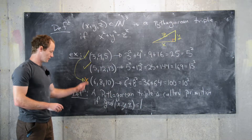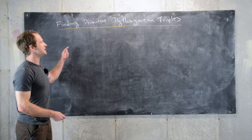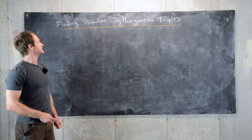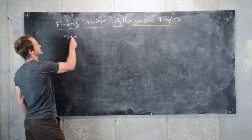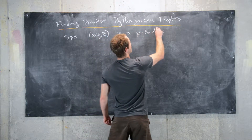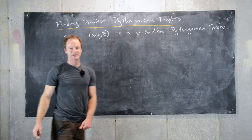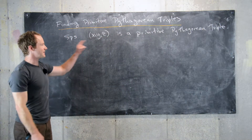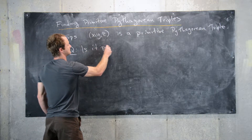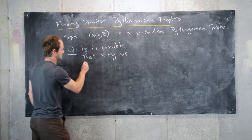Now let's find all primitive Pythagorean triples. We'll start by supposing that (x, y, z) is a primitive Pythagorean triple and see what we can say about x, y, and z. The first question to consider is: is it possible that x and y are both even?